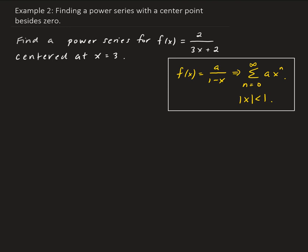The first step is to look at this: when x is 3, this is equivalent to saying x minus 3 equals 0. So what we're going to do is take the expression x minus 3 and substitute it into the function.